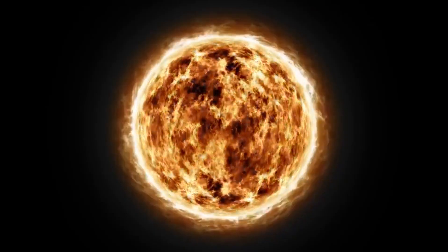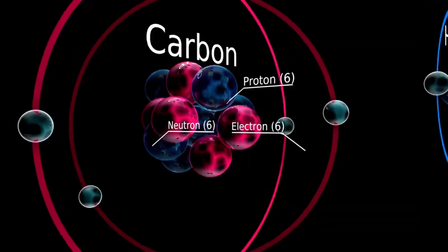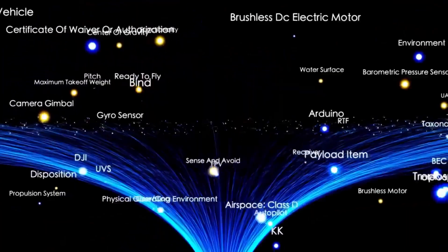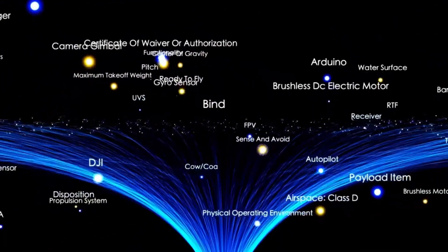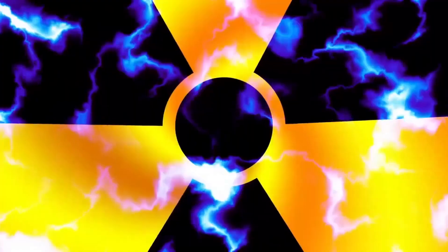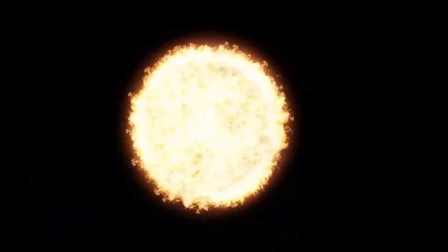These fluctuations are part of its natural life cycle as a red supergiant, but recent observations have revealed changes that are anything but ordinary. Between 2019 and 2020, Betelgeuse experienced a dramatic event known as the Great Dimming. During this period, the star's brightness dropped significantly, leaving astronomers puzzled and sparking widespread speculation about its fate.